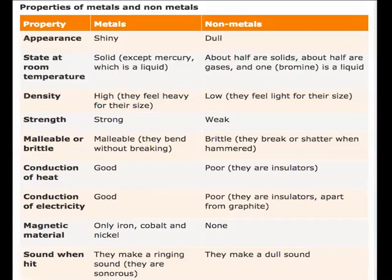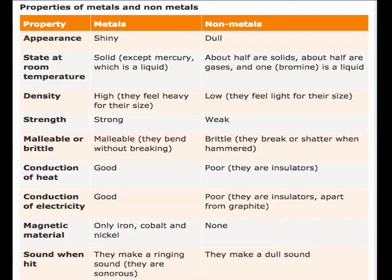The tabular representation shows a comparative study of properties of metals and non-metals. Appearance: metals are shiny, non-metals are dull. Physical state at room temperature: metals are mostly solid with exception of mercury; non-metals — about half are solids, half are gases, and one is a liquid. Density: metals have high density, non-metals low. Strength: metals are strong, non-metals weak. Malleability: metals can be spread as sheets when hammered, showing malleability. Non-metals break or shatter when hammered — hence are brittle.